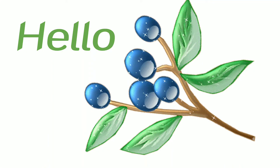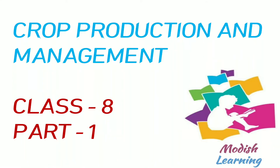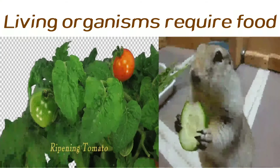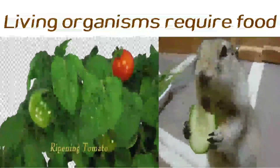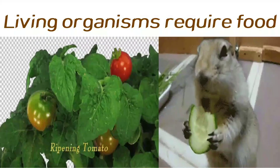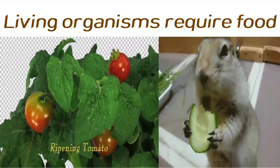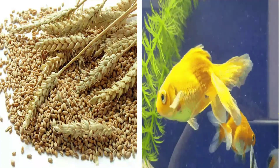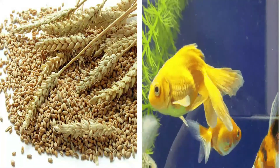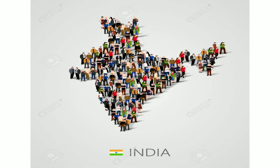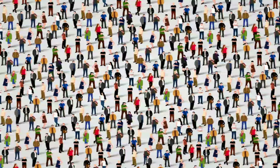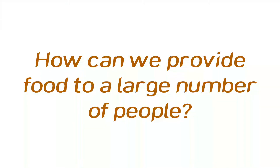Hello everyone, hope you all are doing well. In today's video, let us study the first lesson of standard 8th, that is crop production and management. You know that all living organisms, may it be plants or animals, require food to carry out their various body functions. We get this food from both plants as well as animals. Since India is the second largest populated country in the whole world, we need to provide food to a large number of people.